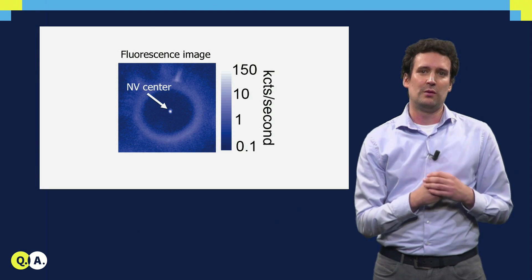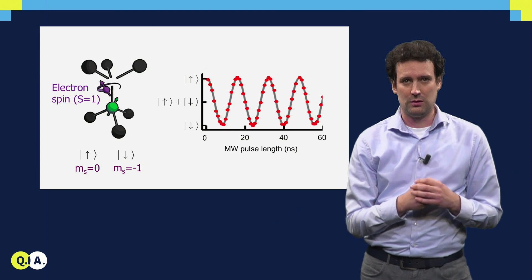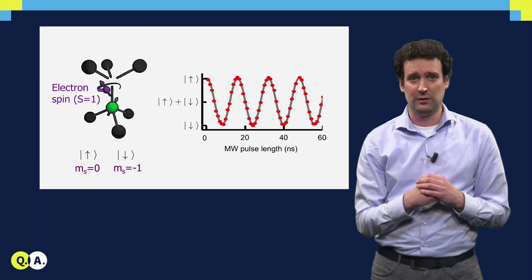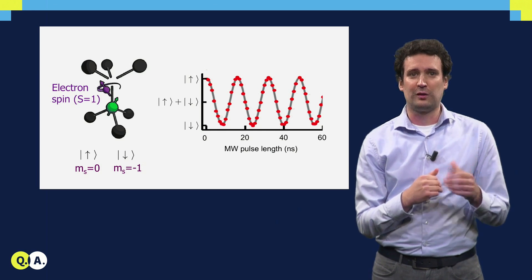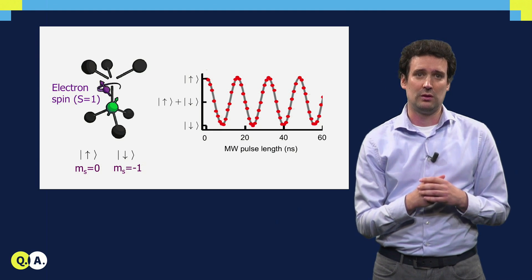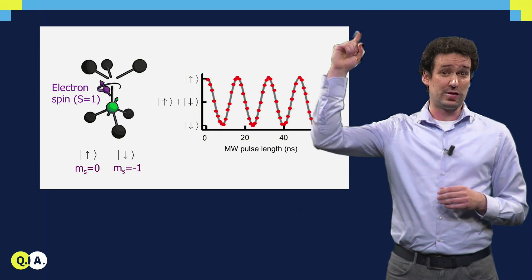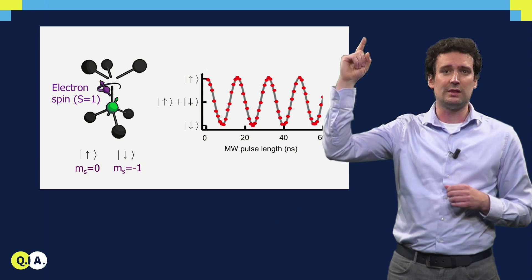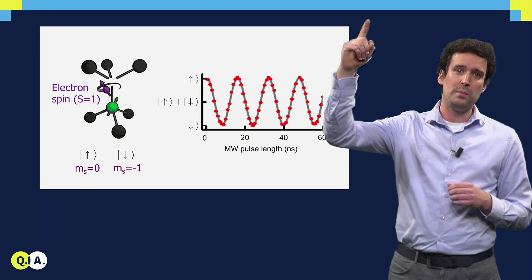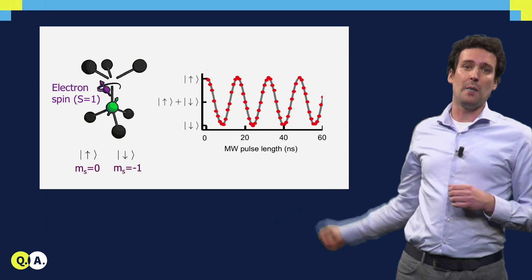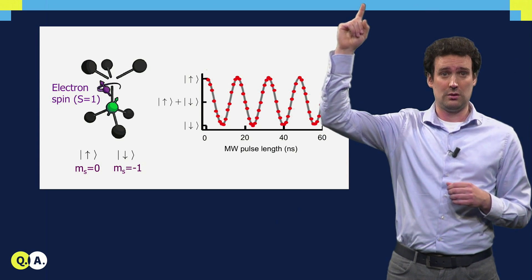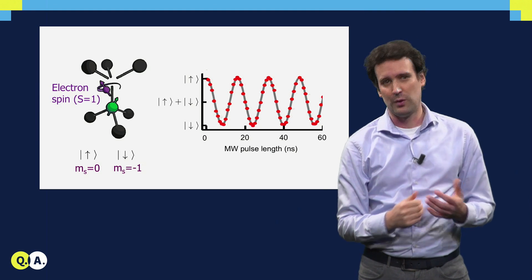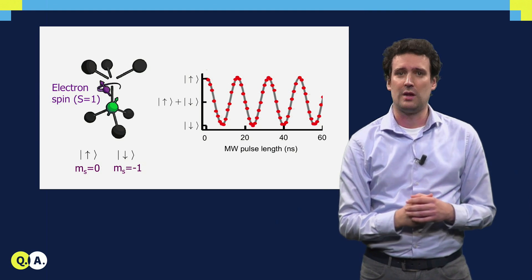The electronic spin of the NV is actually a spin 1, and to use it as a qubit, we just select two levels, and we can control this spin by applying microwave pulses. If we start with the spin pointing upwards, and we apply a microwave pulse of variable lengths, we can see that the spin rotates from up to down, and then back up again in a coherent fashion. And exactly halfway in that rotation, you have created a quantum superposition of spin up and spin down.